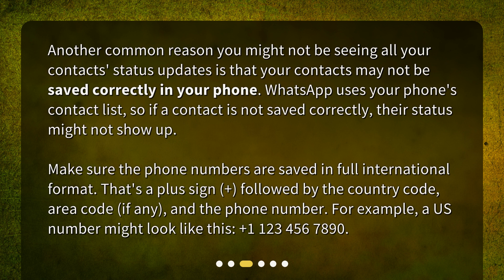Make sure the phone numbers are saved in full international format — that's a plus sign, followed by the country code, area code (if any), and the phone number. For example, a U.S. number might look like this: +1-123-456-7890.